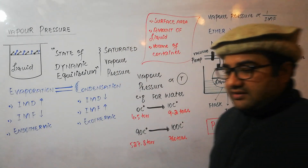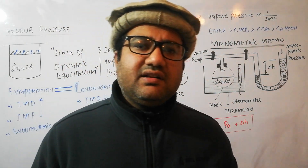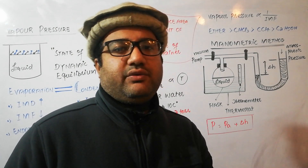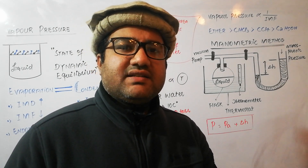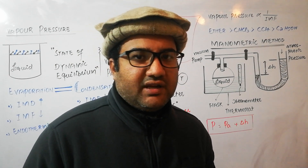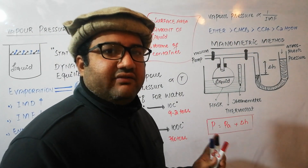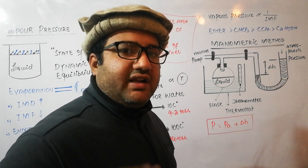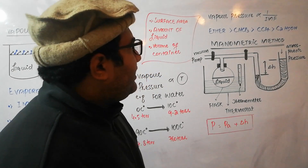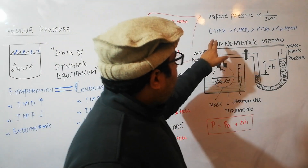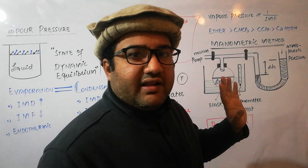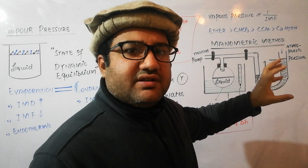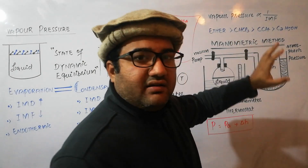The second factor is the nature of the liquid. If two or more liquids are at the same temperature but have different vapor pressures, it is because vapor pressure depends on the size of molecules and the intermolecular forces between them. Vapor pressure has an inverse relation with intermolecular forces. For example, at 20°C, ether has the highest vapor pressure because it has the weakest intermolecular forces, while chloroform is second.